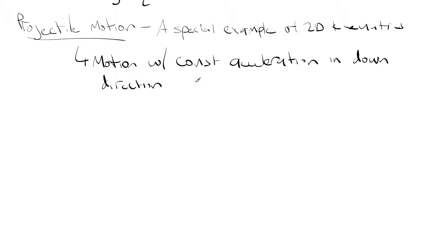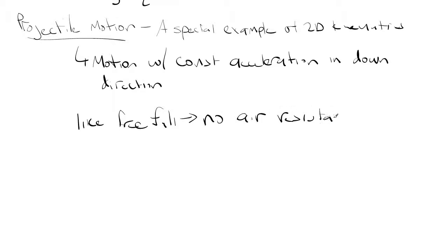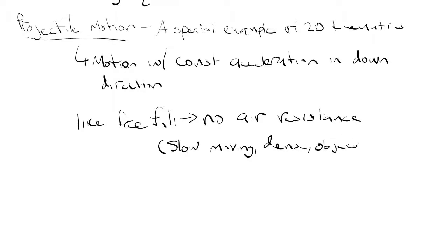Just like free fall, we have a couple of assumptions. We're ignoring air resistance. No air resistance is a good assumption for slow-moving and dense objects — like balls or rocks — and slow-moving meaning at the speed at which a human could throw something. That's usually when you can neglect air resistance.